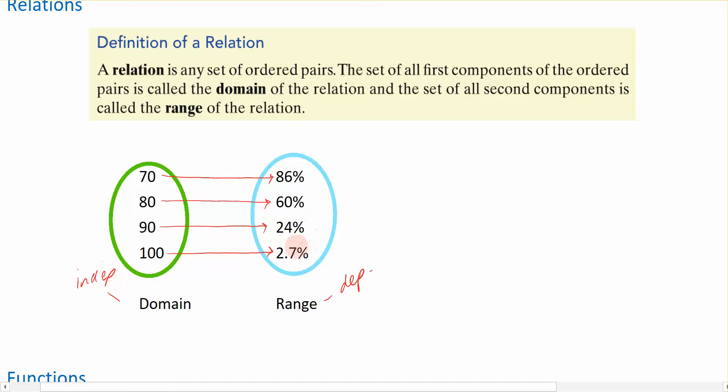Okay, so again, the range are dependent values and they depend upon the domain that we started with. My survival rate depends on the age at which I am. So this is the definition of a relation and we're going to build it even further to talk about a function.